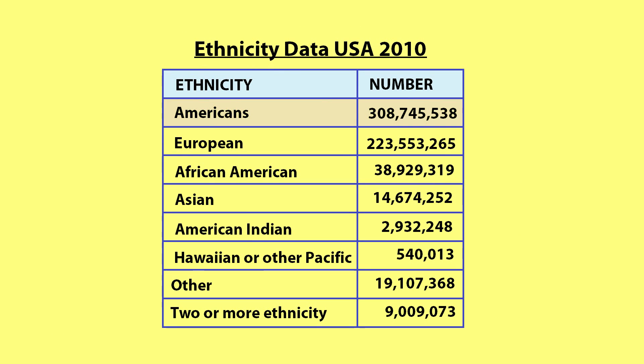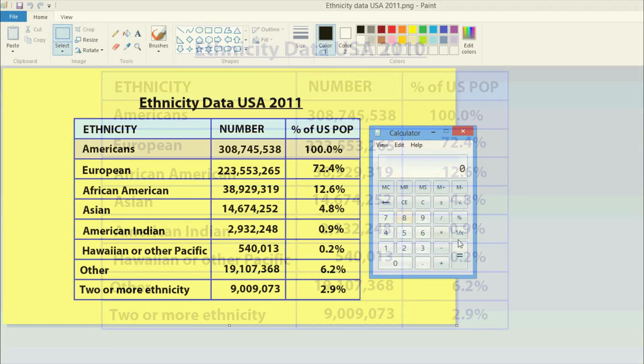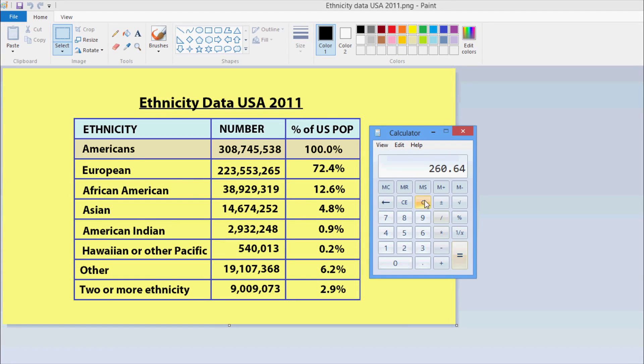First you need some data. I have data showing the ethnic composition of the United States from the 2010 census. I need to convert the raw figures into percentages. Multiply each percentage to the degrees in a circle by multiplying it by 3.6.